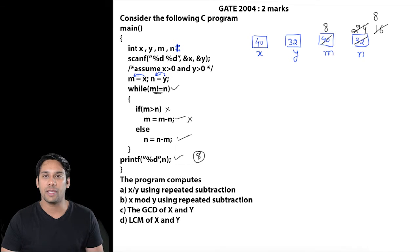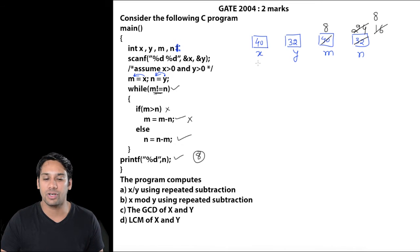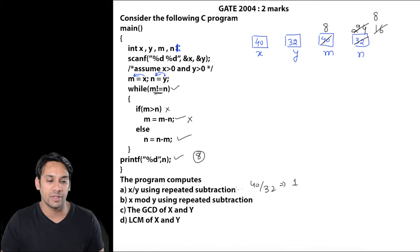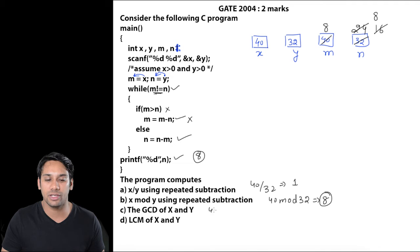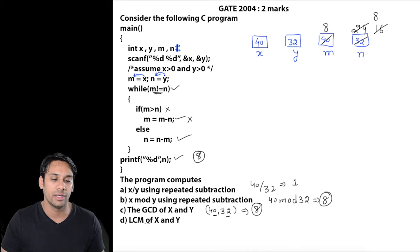Now let us check out the options. Option a says x divided by y using repeated subtraction. If we divide 40 by 32 we get 1 since both are integers and we ignore the fraction part. Option b is x mod y using repeated subtraction: 40 mod 32 gives 8, so this may be correct. Option c is the GCD of x and y: the GCD of 40 and 32 is 8, so this may also be correct. Option d is LCM of x and y: the LCM of 40 and 32 would be greater than both, but we got 8, so this option is not correct.